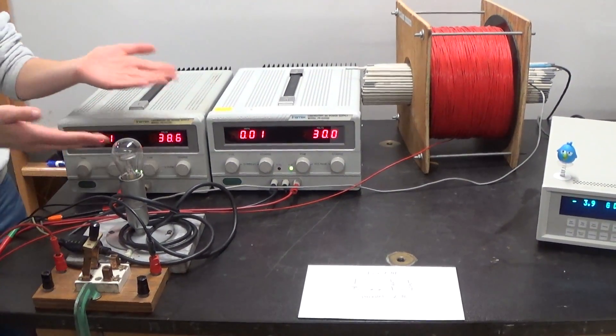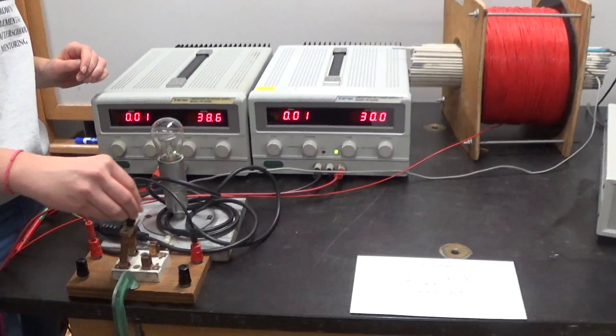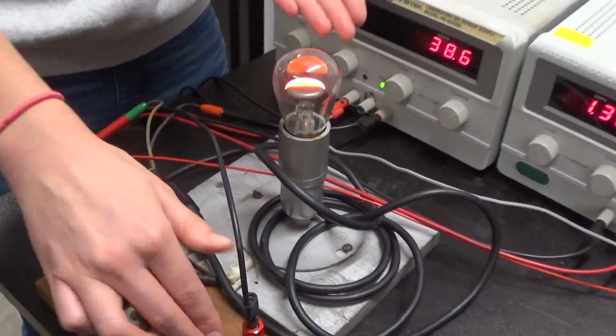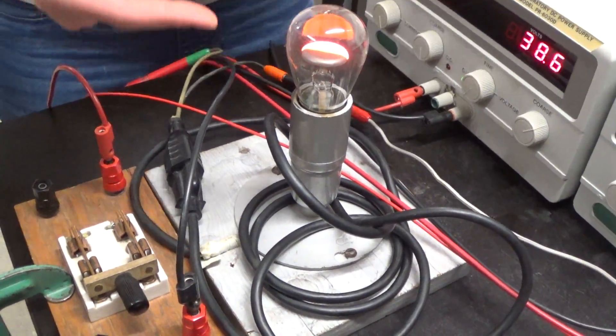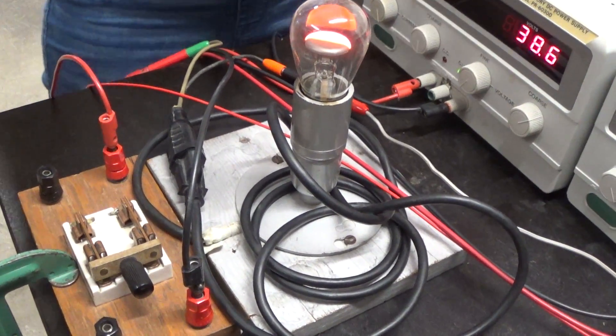So you can see here the switch is open, no current flows, but when we close the switch, one half of the light bulb lights up. Each half of the light bulb corresponds to a different direction of current.